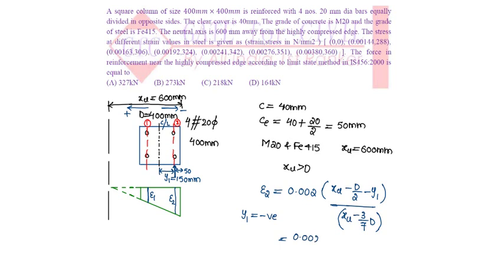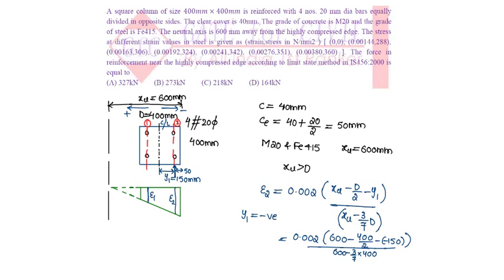Substituting: 0.002 times (XU = 600 minus D/2 = 200 minus of minus 150) divided by (XU = 600 minus 3/7 of D = 400), epsilon 2 will be obtained as 0.0026.